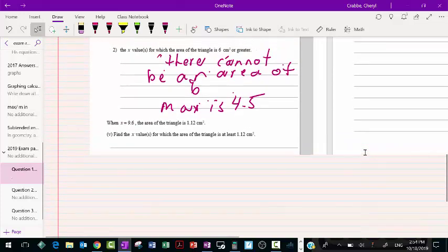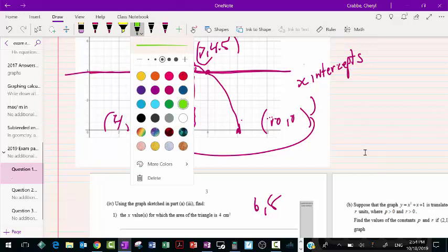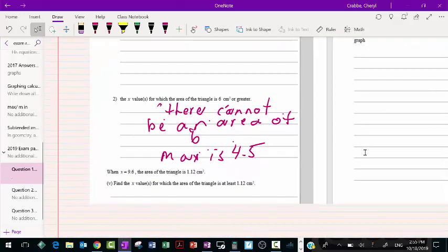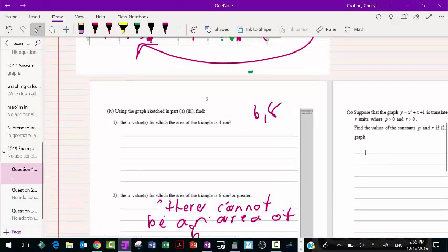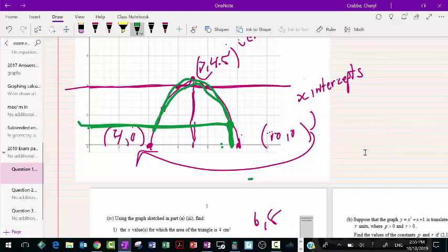Now when x is 9.6, the area of the triangle is 1.2. So basically they're saying, well that's 10, so 9.6 is sort of somewhere there. Somewhere, I mean 9 there, 9.6 somewhere in here. And it's 1.2, so it's somewhere there. So basically that's just an estimate. So find the x values for which the area of the triangle is at least 1.2. So it's going to be at least 1.2, so all of this is basically when the area is bigger than 1.2. So all of that area, so you've got to name that.